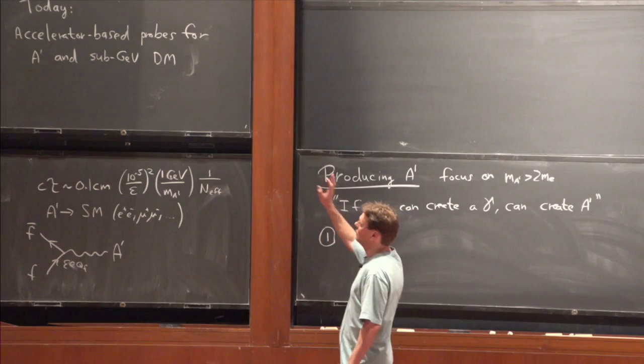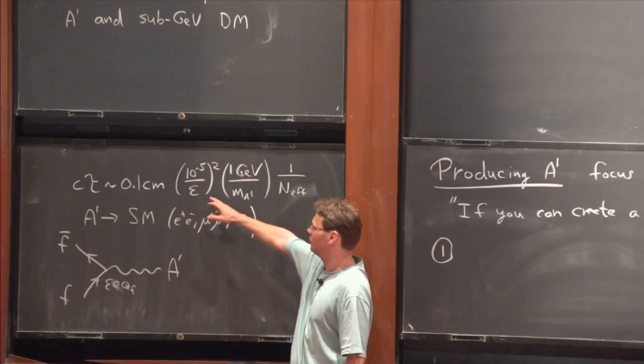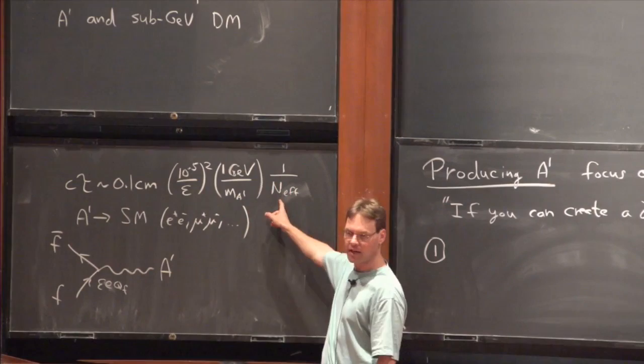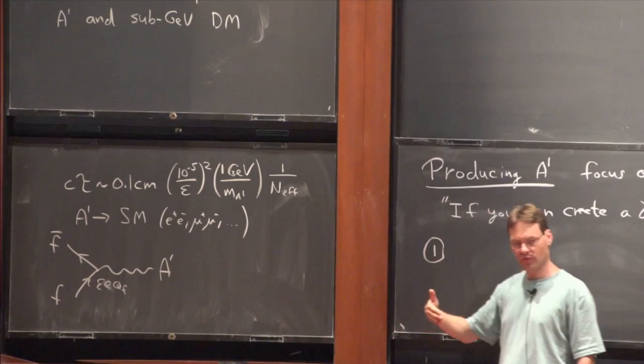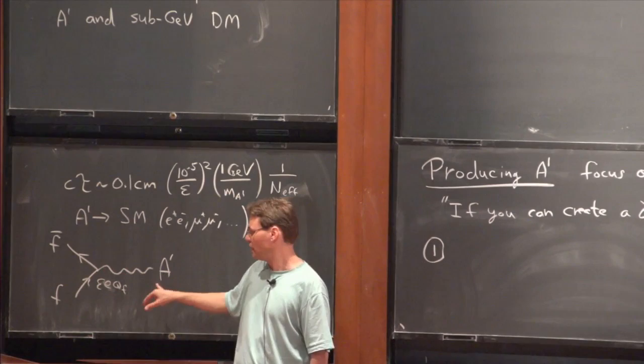One thing that'll be important is the decay length of the dark photon. It's about 0.1 centimeters for an epsilon of 10^-5 and a dark photon mass of a GeV. There's an effective number of particles that can decay to in the standard model — one if it's below the muon threshold, and more if it's above. These are the possible decay modes, including hadrons. Any charged particle can in principle produce a dark photon.